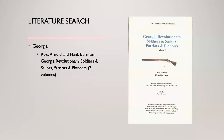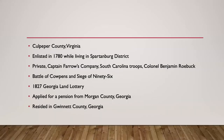Now we know he's born 1753, dies 1852, from Culpeper County, Virginia, Campbell and Gwinnett counties. He has a pension, some service in South Carolina, and his wife is Barbara. The first thing I do after this is a literature search on Georgia, since that's where he applies for the pension. I usually start with Ross Arnold and Hank Burnham's 'Georgia Revolutionary War Soldiers and Sailors, Patriots and Pioneers,' a two-volume set. From that we add that he enlisted in 1780 while living in Spartanburg District, South Carolina, that he served at the Battle of Cowpens and the Siege of 96, and that he applied for a pension in Morgan County, Georgia.